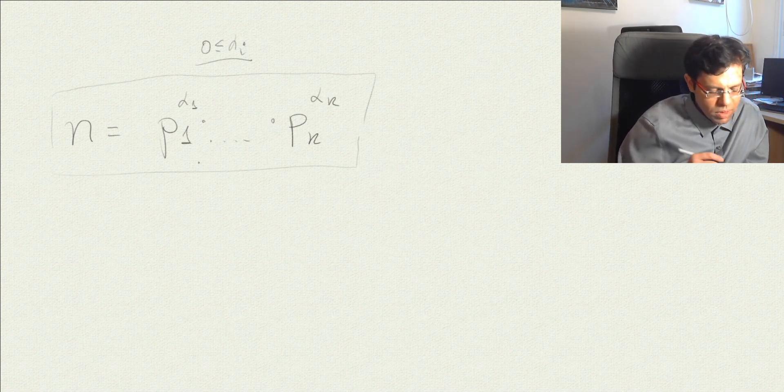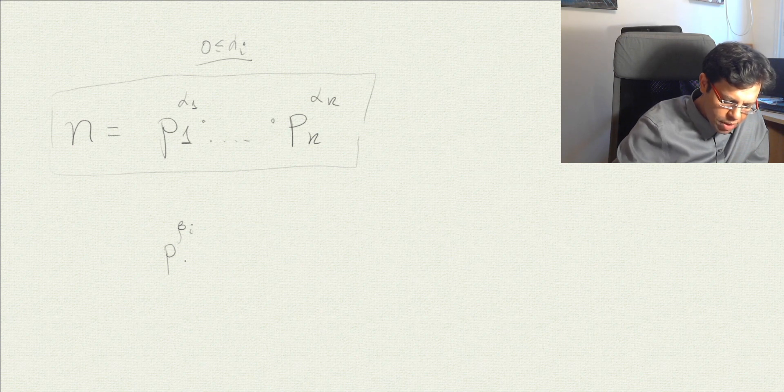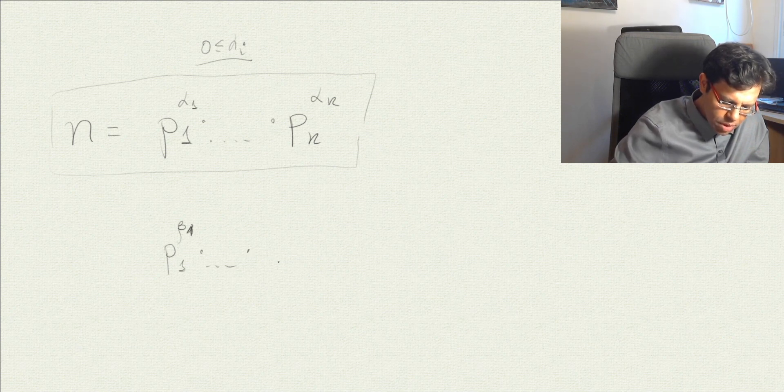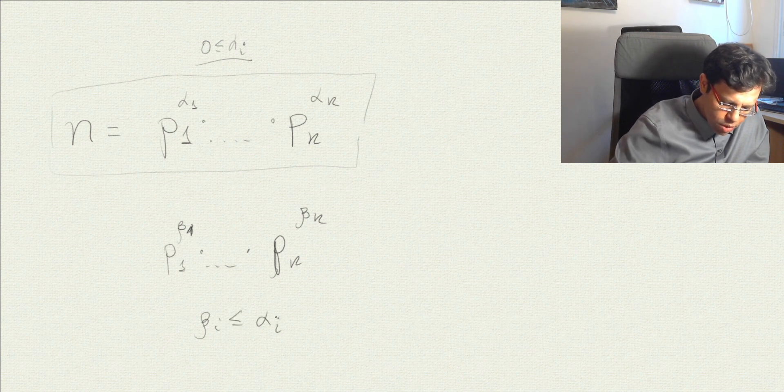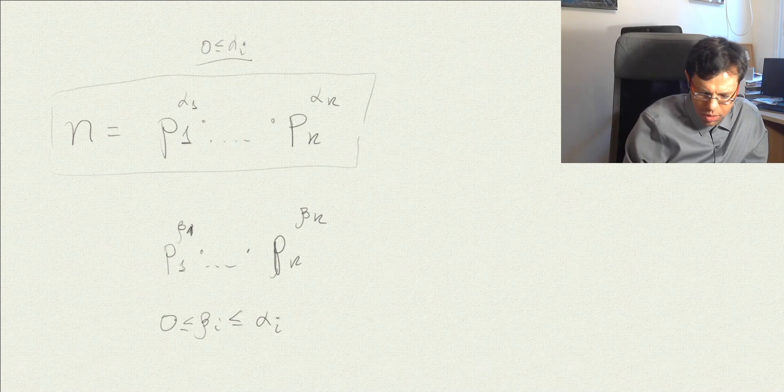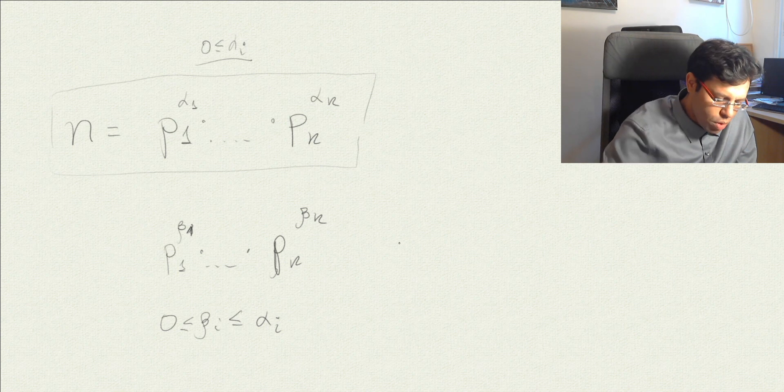What we see from here is that a number is a factor of n if and only if it is of the form p1 to the power of beta 1 times pk to the power of beta k. Each such number would be a divisor of n as long as beta i is smaller or equal to alpha i and greater or equal than 0. Every such number is a factor, is a divisor of n. Let's count how many are there.